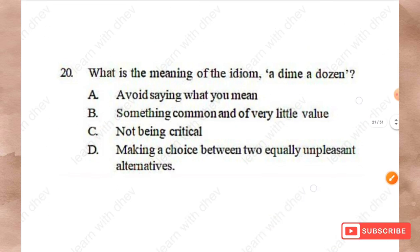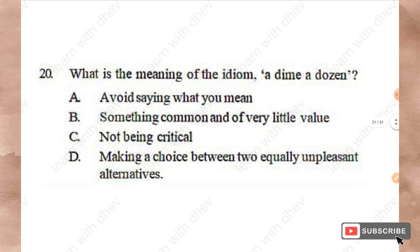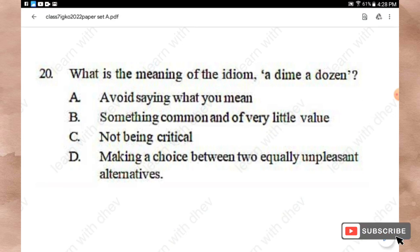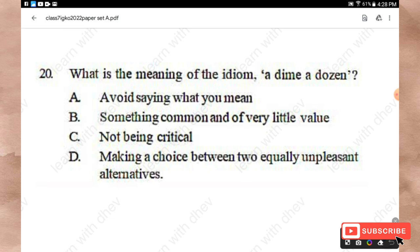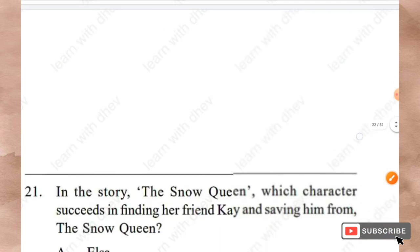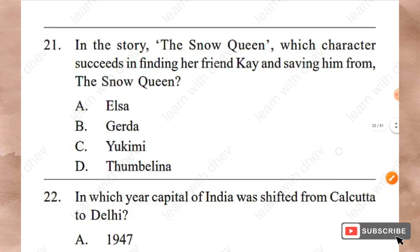Question 20: What is the meaning of the idiom 'a dime a dozen'? Options: Avoid saying what you mean, something common and of very little value, not being critical, making a choice between two equally unpleasant alternatives. The idiom 'a dime a dozen' means Option B — something common and of very little value.